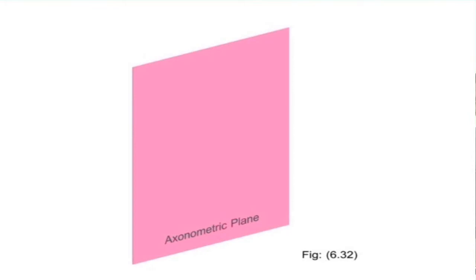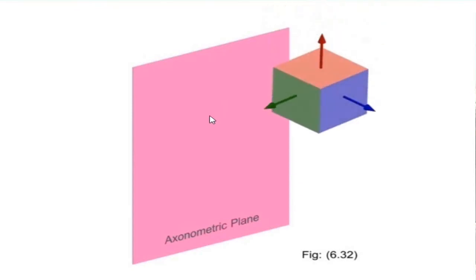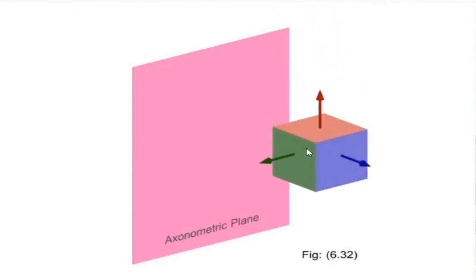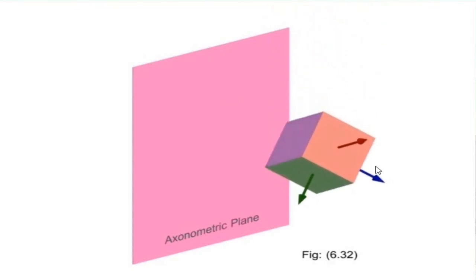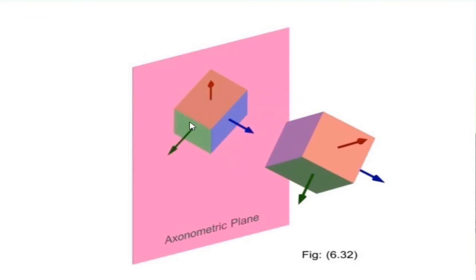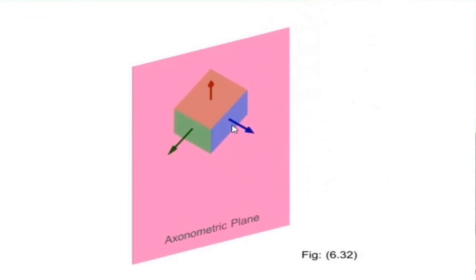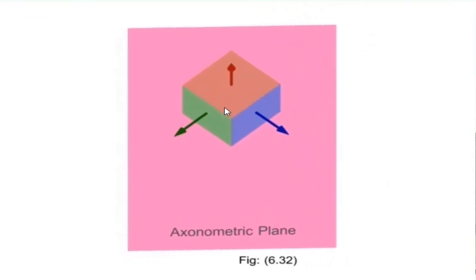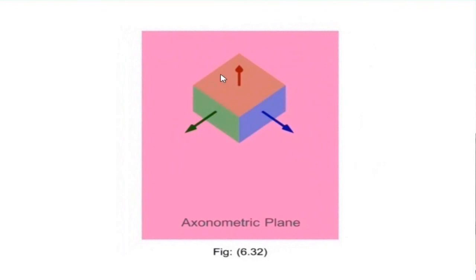This is an example of axonometric projection. Here is the axonometric plane, and the principal axes of the object are inclined to the axonometric plane. In the same single view, you can see all the faces of the object, so you get a clear idea about the 3D shape of the object.